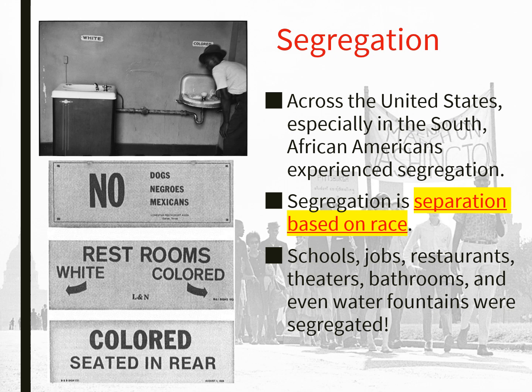In the 1960s, we're talking about separation based on race — schools, jobs, restaurants, theaters, bathrooms, even water fountains were segregated. Certain court cases came up that mentioned 'separate but equal,' and we all know they were definitely not equal. Black schools did not get all the nice things white schools got, and white restaurants were probably a little nicer than the Black restaurants. That's how they got around the law.